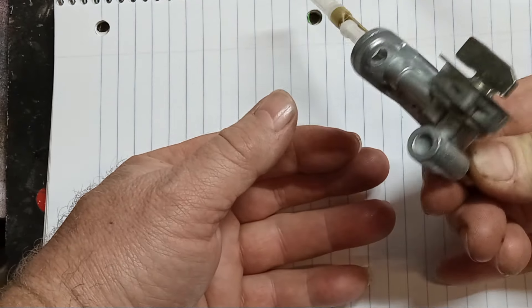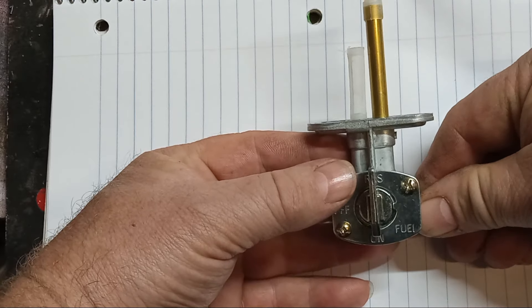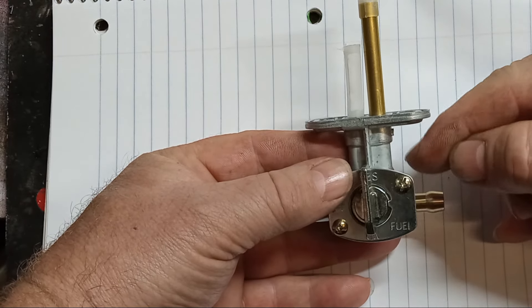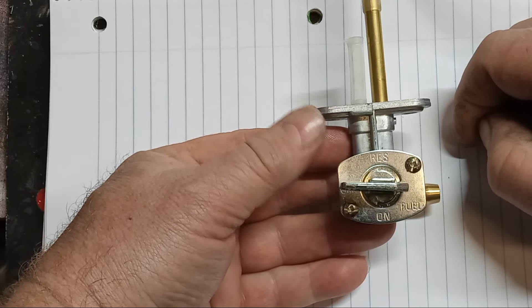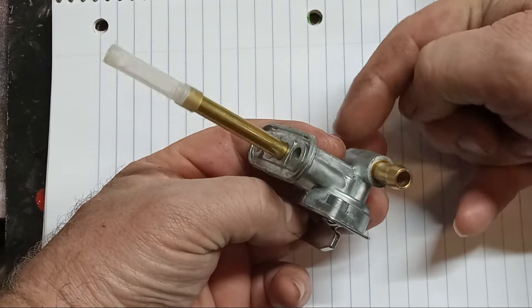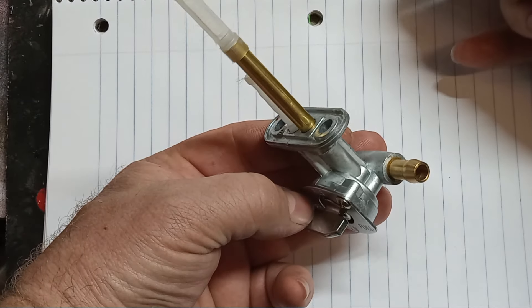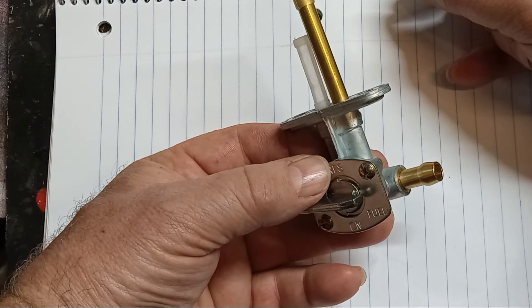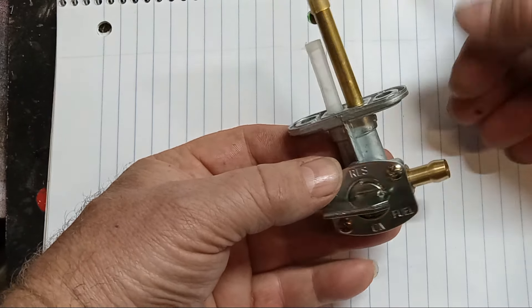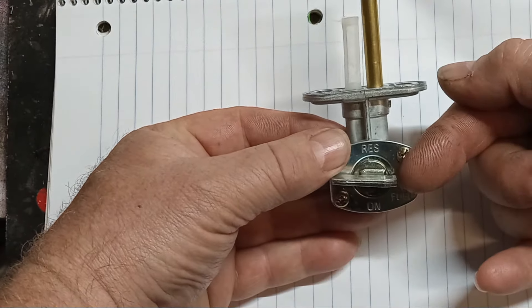Now, this is a mechanical petcock, but some of them are vacuum actuated. This one's got an off. On the vacuum actuated ones, they'll have a little diaphragm on the back here with a vacuum hose going to one of your intake boots. As soon as the engine stops spinning, it loses vacuum and closes the fuel automatically for you.